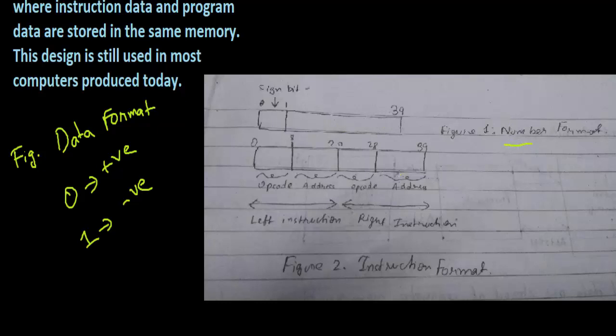Next we have figure 2 that represents instruction format, which is 40 bits long, but each instruction is 20 bits. You can see it is divided from 0 to 20 and then 20 to 39. It is stored in a 40-bit memory with 8-bit op code - operation code - that defines operations to be performed, and the 12-bit address is used to store the operand of the instruction.